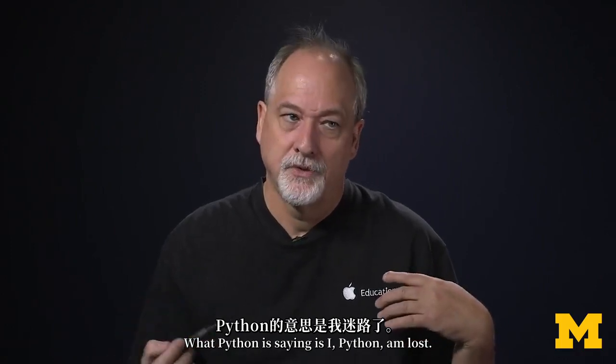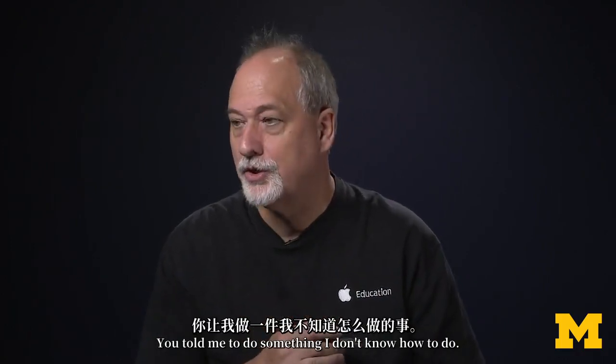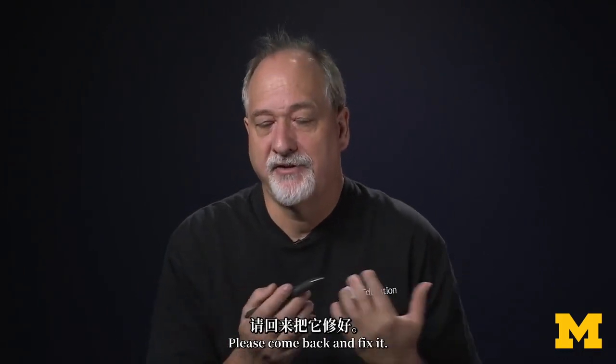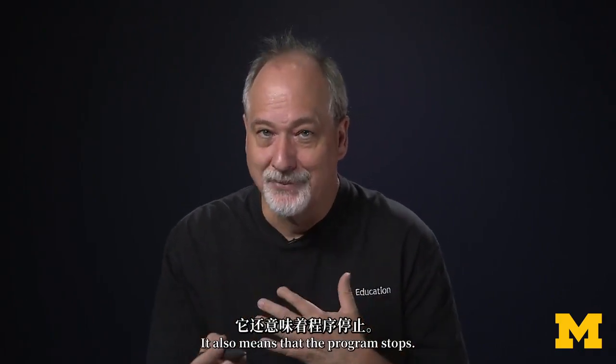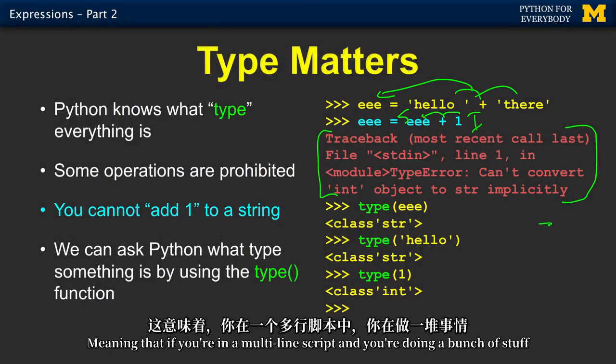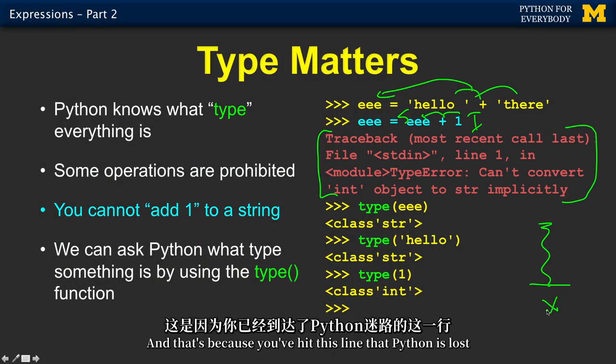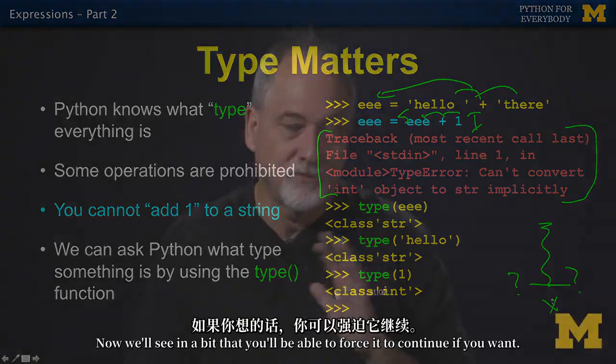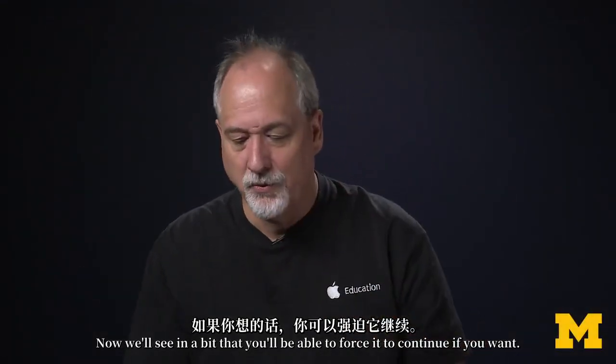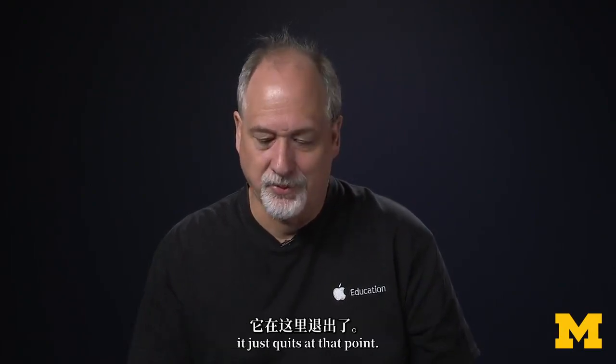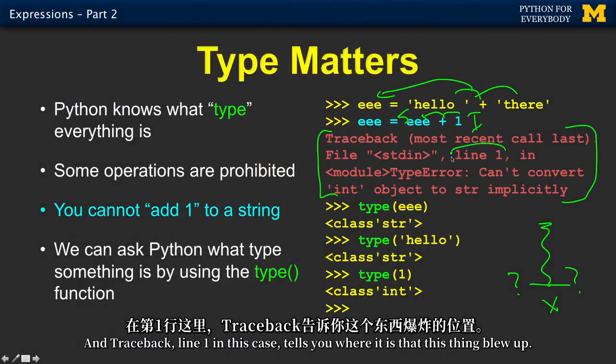It is Python telling you, it's not Python telling you that you're a bad programmer. Or that you're never going to be a programmer. Or that you're completely unsuitable for a programmer. What Python is saying is, I, Python, am lost. You told me to do something I don't know how to do. You need to go remember what it is that I'm capable of doing as Python. Please come back and fix it. It also means that the program stops. Meaning that if you're in a multi-line script and you're doing a bunch of stuff and there's a traceback here, the code after that quits. And that's because you've hit this line that Python is lost.